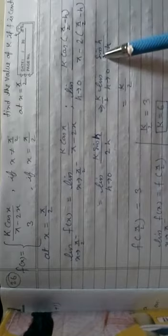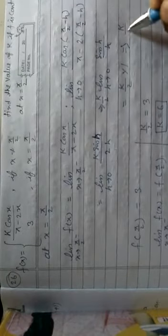k/2 is a constant, so we take it out: (k/2) · limit h tends to 0 of sin(h)/h. You know very well that sin(h)/h = 1. So the result is k/2 × 1 = k/2. And the value of f(π/2) is given as 3. Since limit x tends to π/2 negative equals f(π/2), we get k/2 = 3.